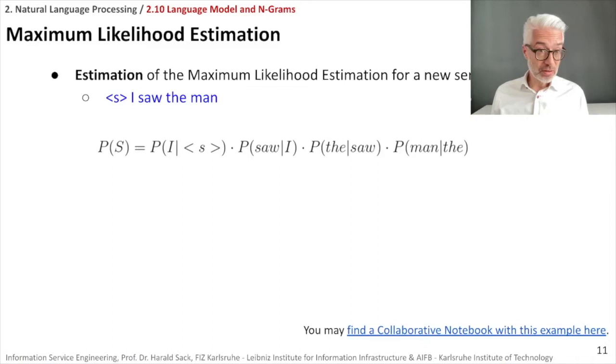These are our base tables with the frequency counts. How often do bigrams and unigrams occur? And what we want to do here is we want to make the estimation of the maximum likelihood estimation for a new sentence, which is not in our corpus. For example, what's the likelihood that a sentence like I saw the man would occur? Based on the bigram model, we have the probability of the sequence, which starts with I followed by the start symbol.